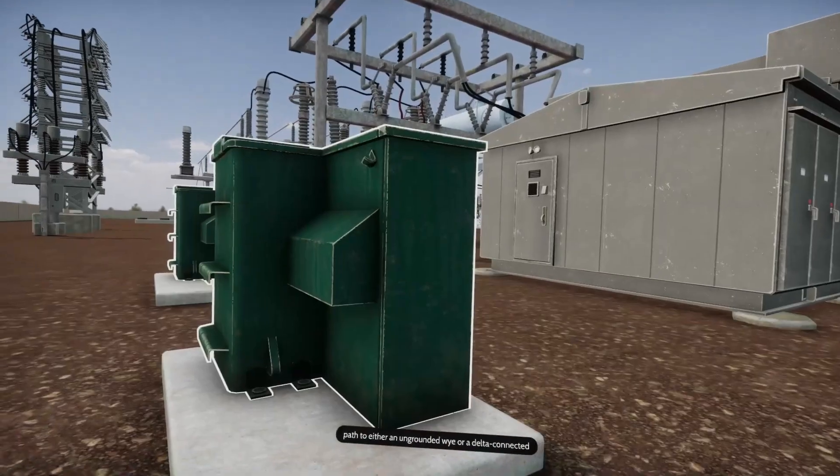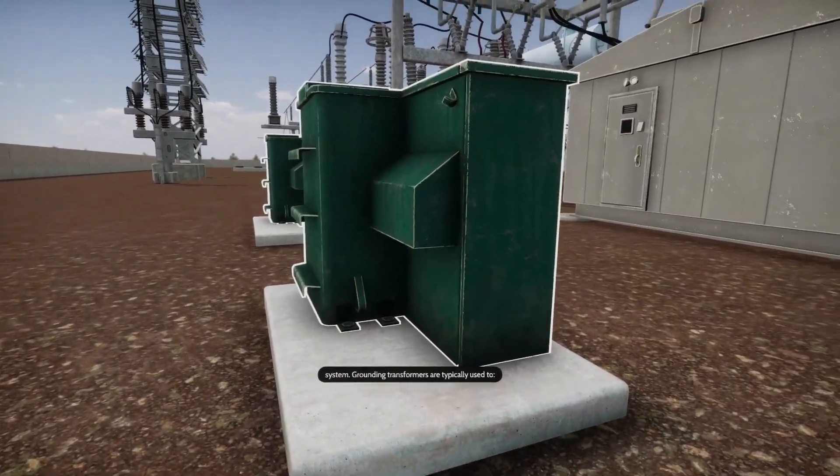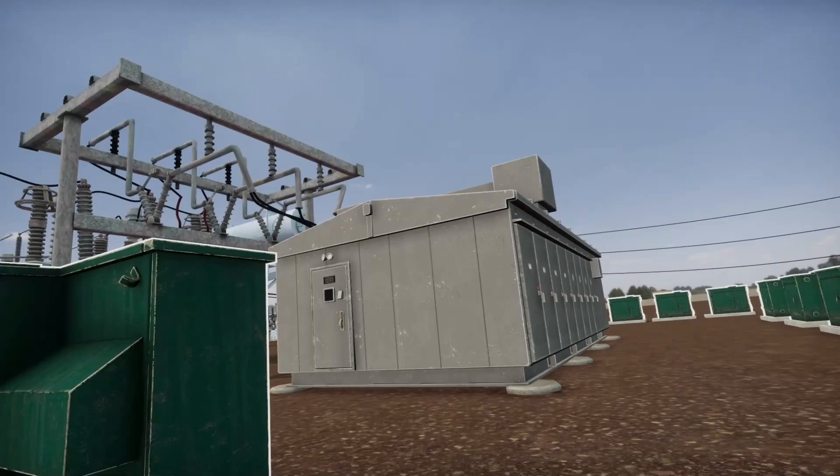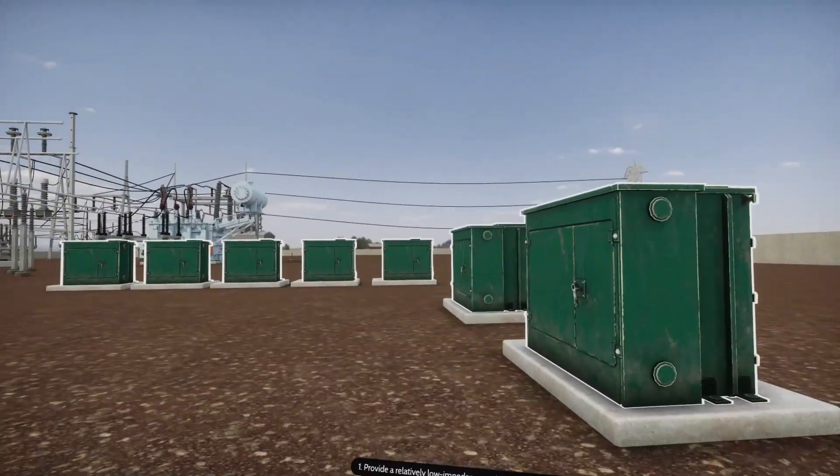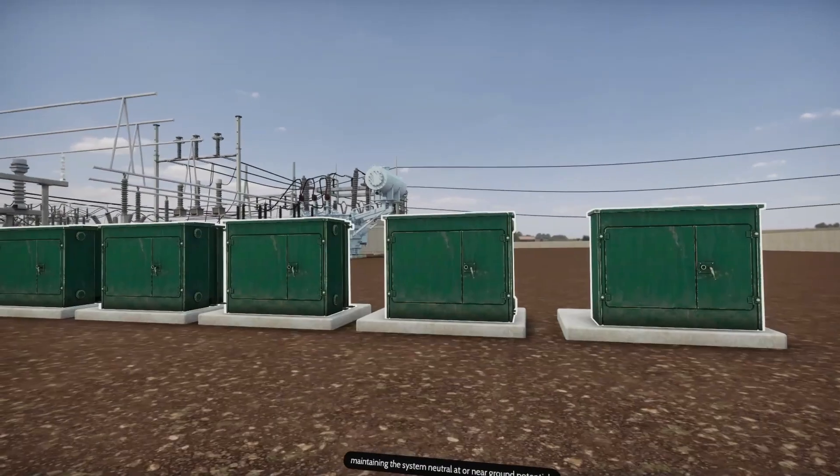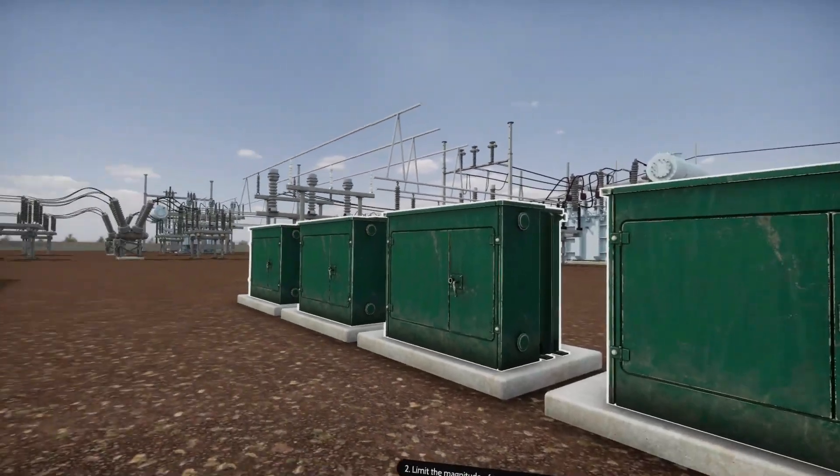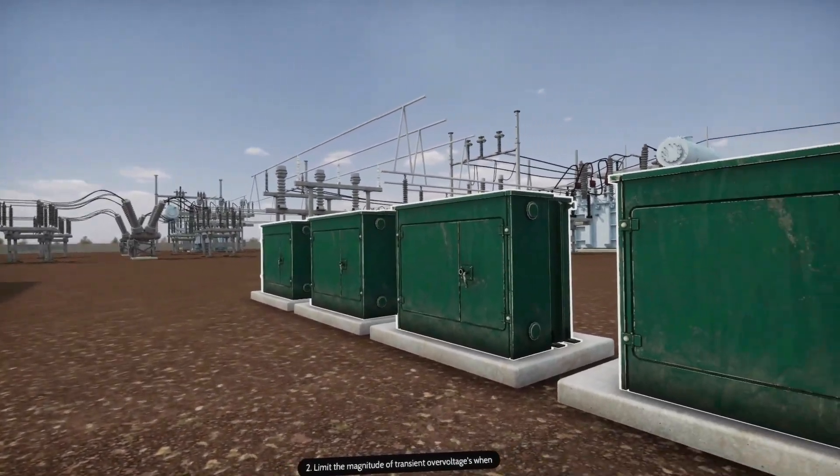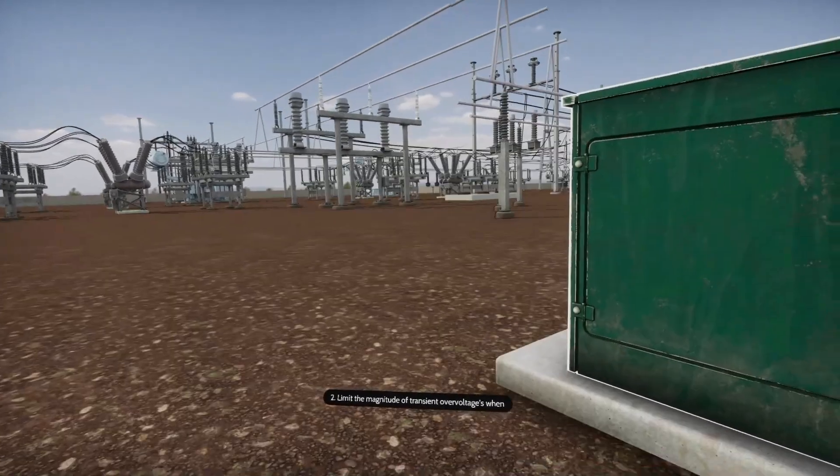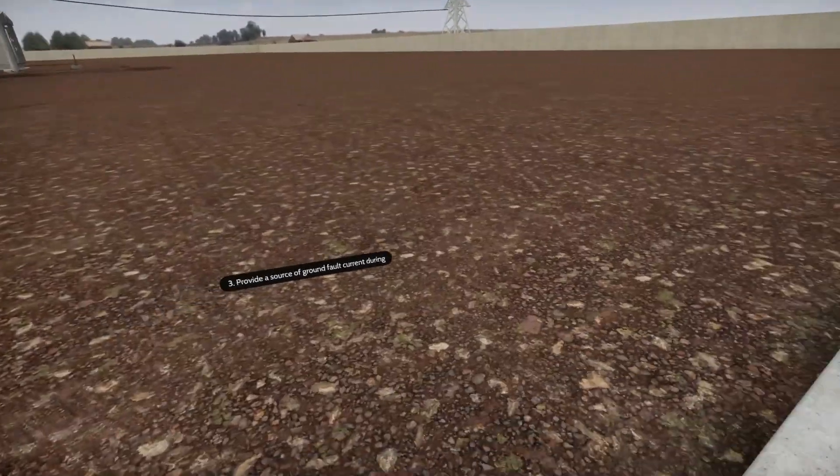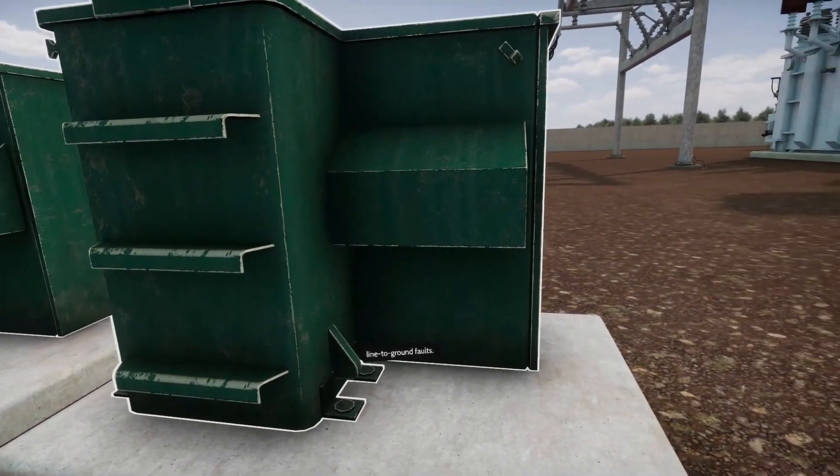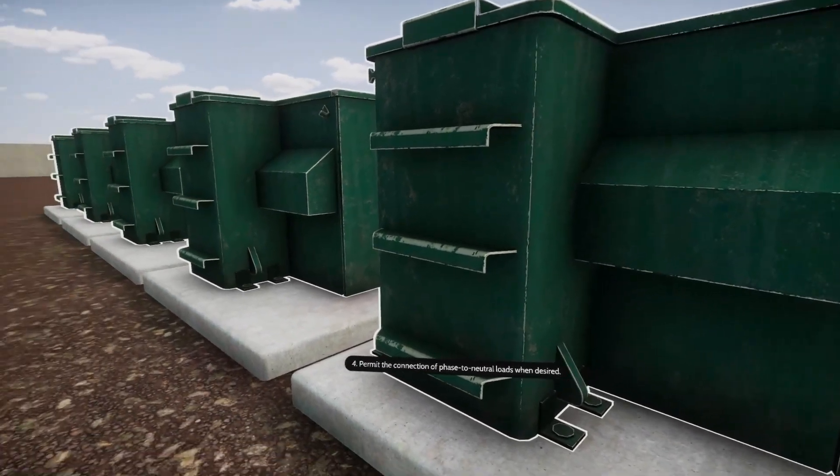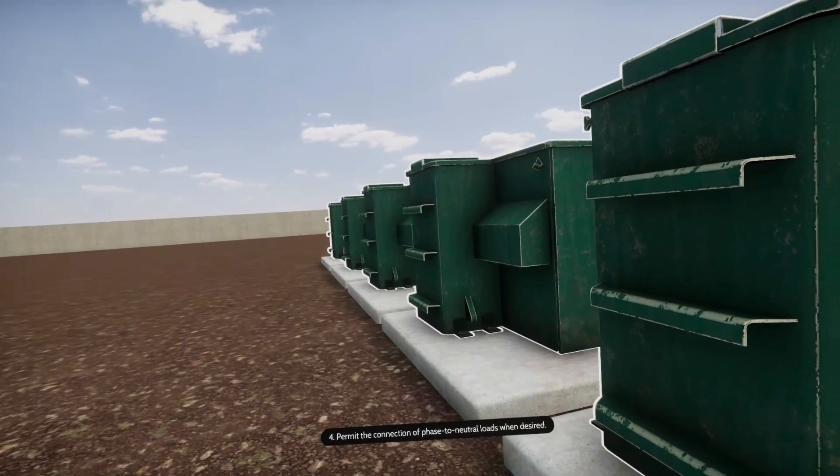Grounding transformers are typically used to: 1. Provide a relatively low impedance path to ground, thereby maintaining the system neutral at or near ground potential. 2. Limit the magnitude of transient over-voltages when re-striking ground faults occur. 3. Provide a source of ground fault current during line to ground faults. 4. Permit the connection of phase to neutral loads when desired.